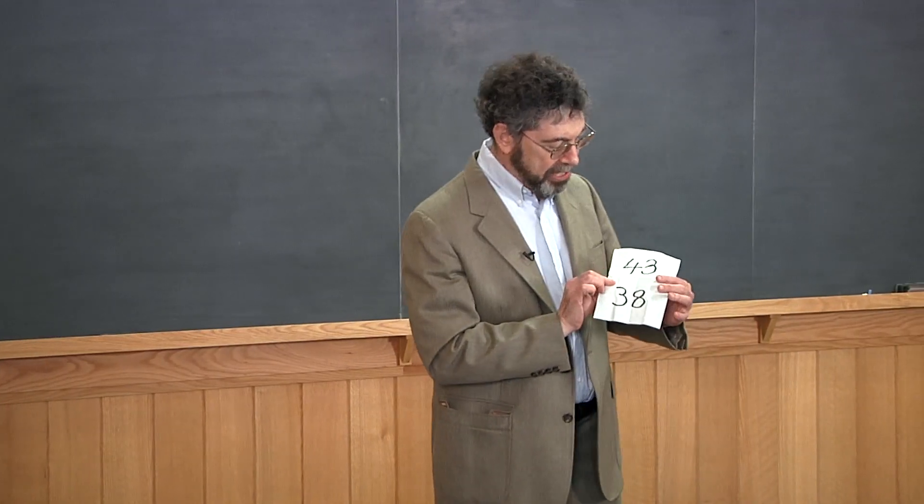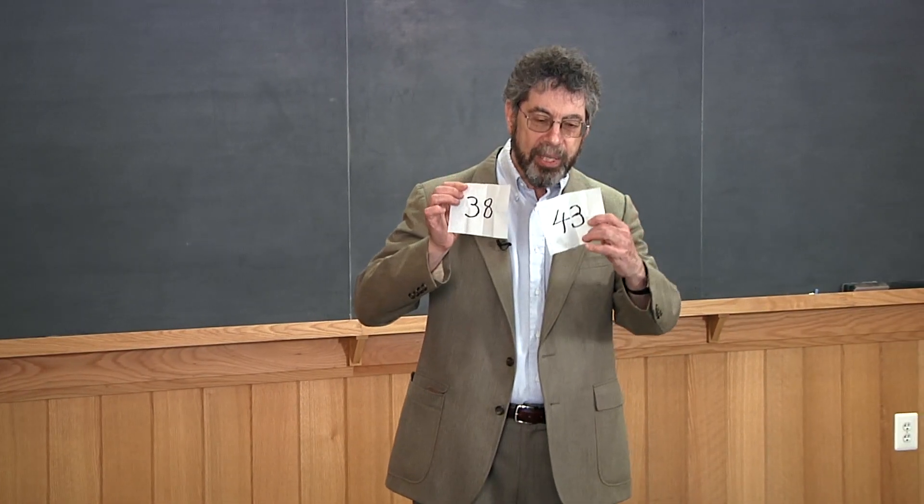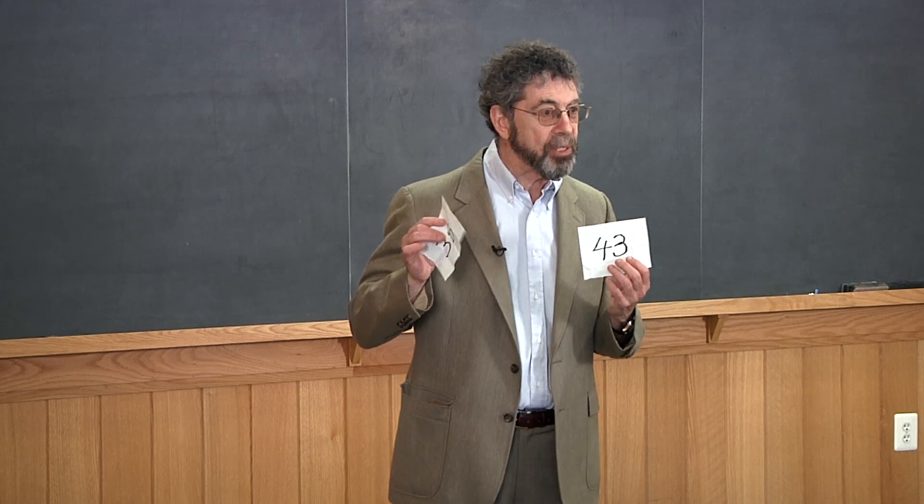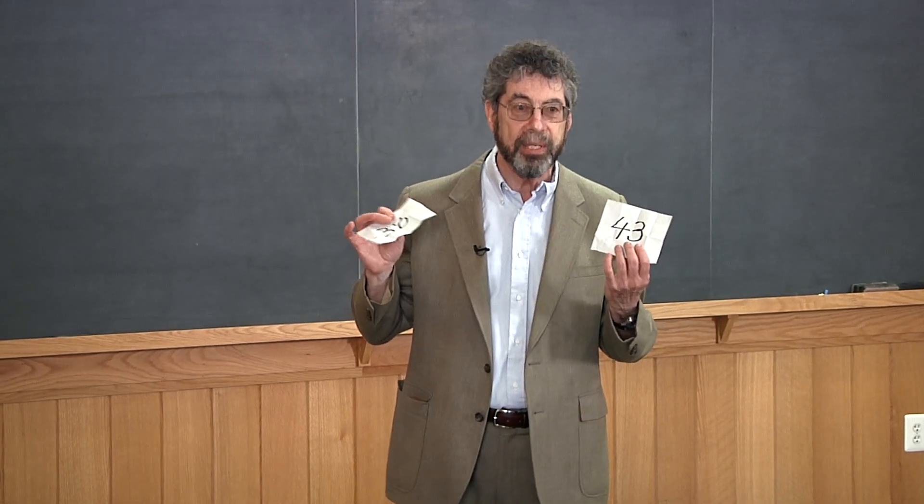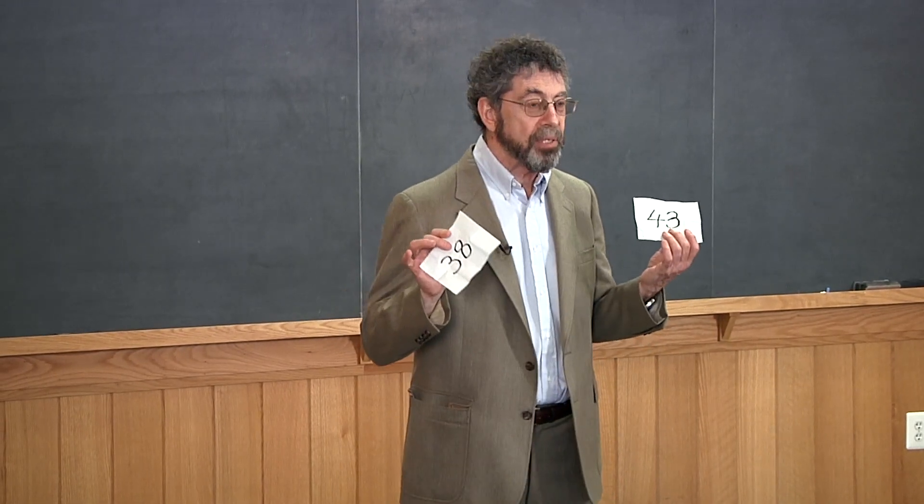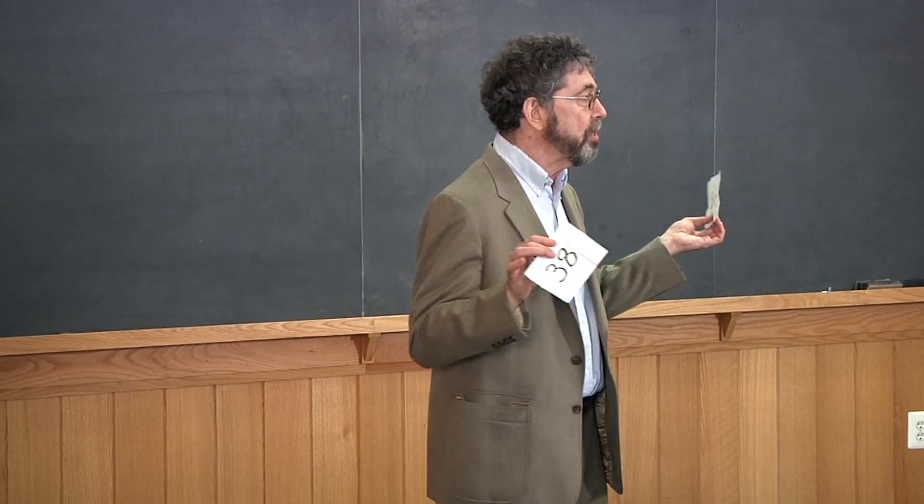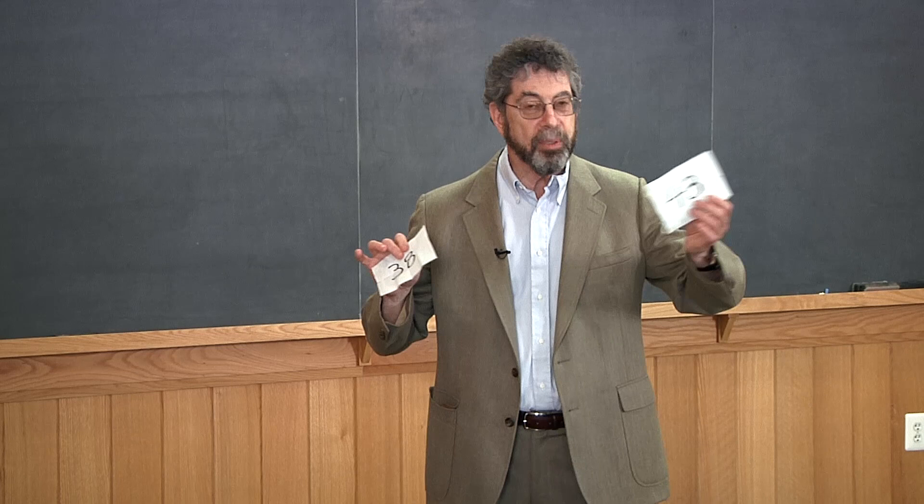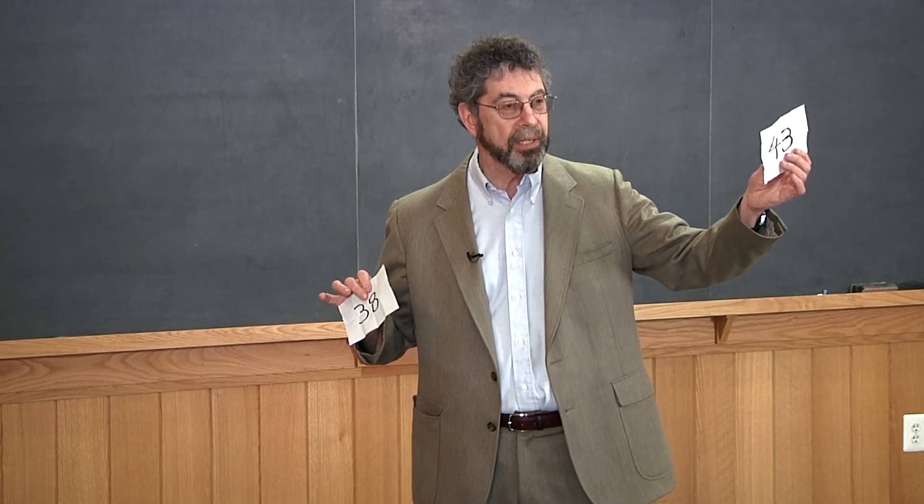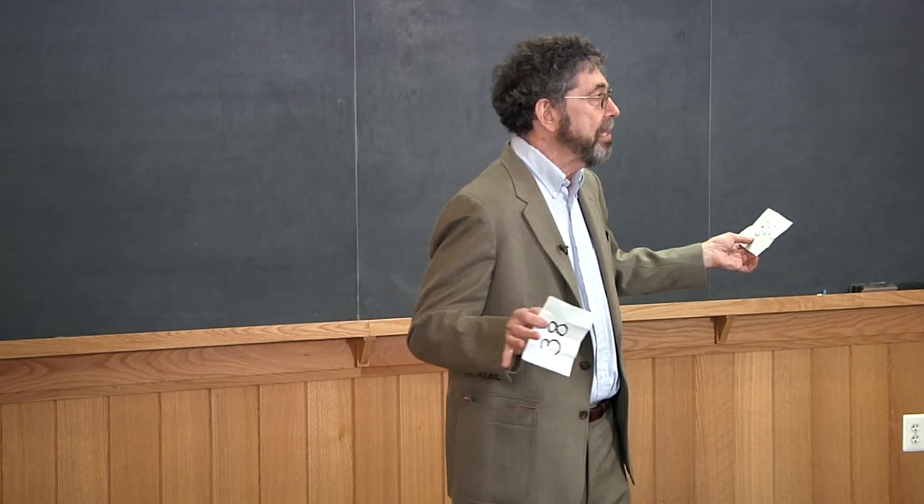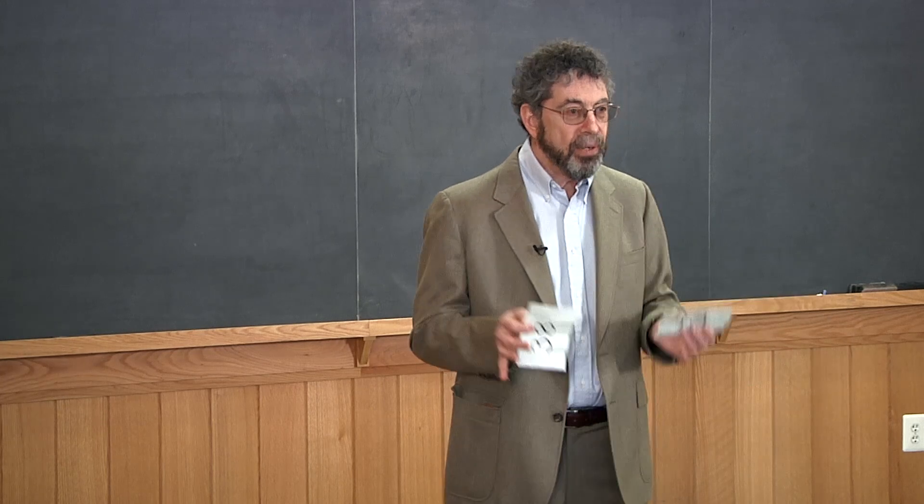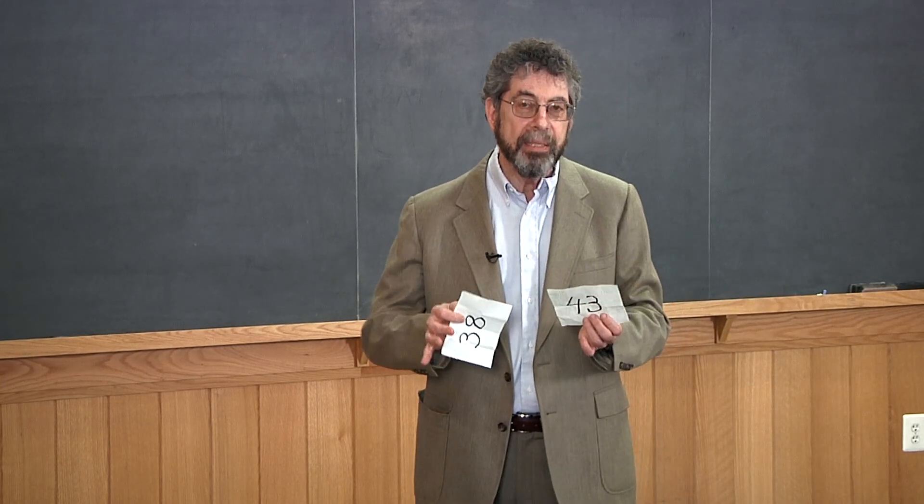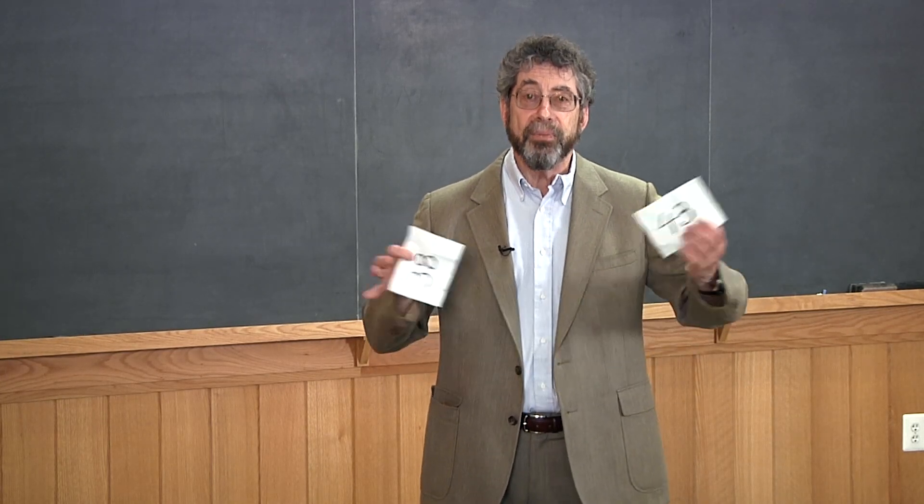Now, is there really any way of knowing, looking at one of these two numbers, whether it's going to be the larger or the smaller of the two? Maybe I always pick numbers in the 30s. Maybe I always pick numbers in the 40s. Maybe I pick one number in the 30s and one number in the billions. She doesn't know anything about my psychology. Is there any way that she can play this game to get better than just a 50-50 guess?